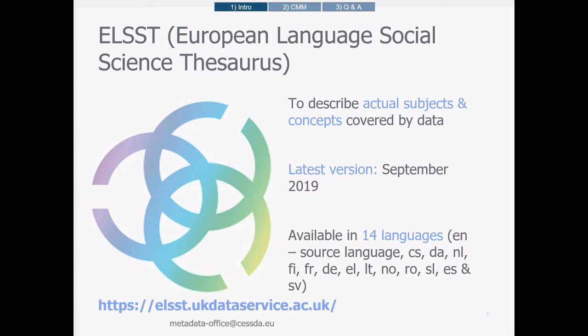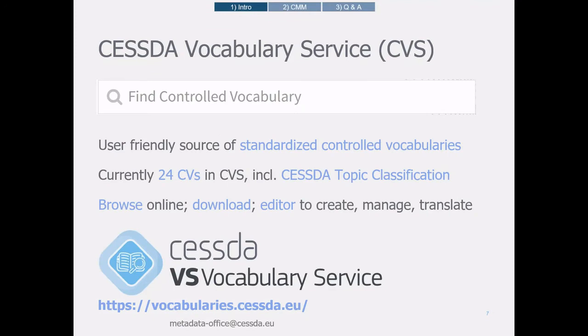The latest version of the multilingual ELST was released in September 2019. The latest release contains two significant changes: firstly, a new language, Dutch, was added; and secondly, scope notes were added to the Slovenian version. ELST is now available in 14 different languages.